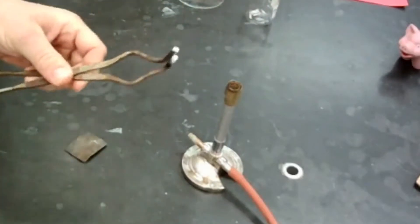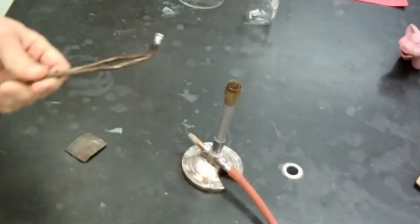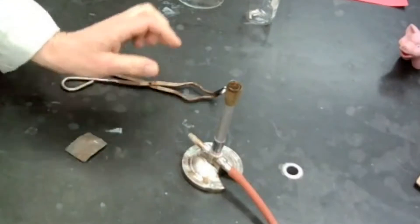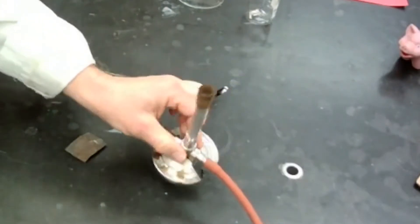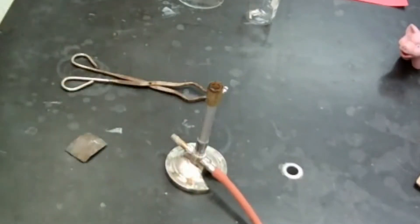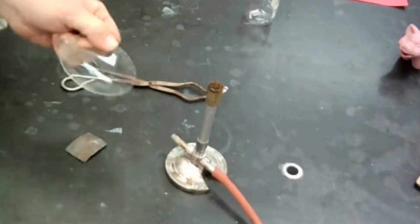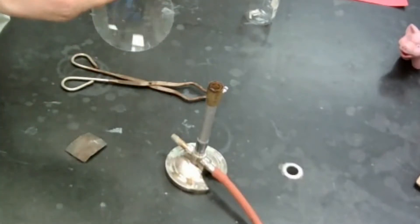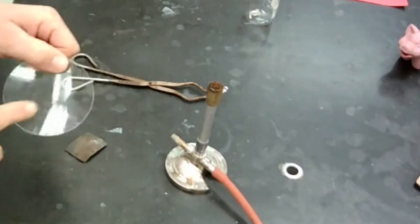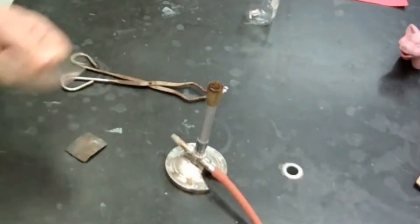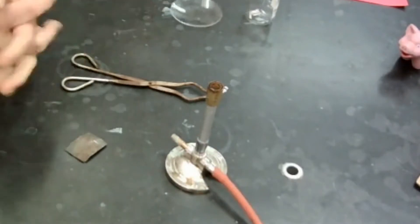We're going to use tongs in order to hold the magnesium ribbon so I don't get third-degree burns. We're going to use the Bunsen burner right here to ignite the magnesium ribbon, and in the end we're going to put the burned magnesium ribbon into this watch glass so that we can identify what the products of this reaction are.